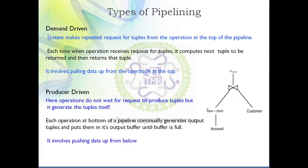There are two types of pipelining: demand-driven pipelining and producer-driven pipelining. Demand-driven pipelining involves pulling data from the operation at the top. In demand-driven pipelining, the projection operation makes a request to the join operation to produce output. As the request is received by join, it sends a request to the selection operation. Selection then performs its operation on the account relation, gets intermediate output, passes it to join, and join provides its output as input to projection.